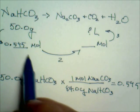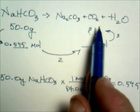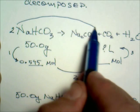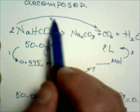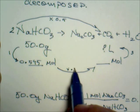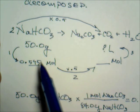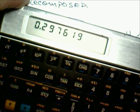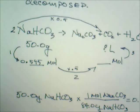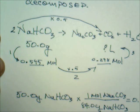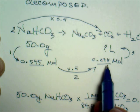Now we go from moles of sodium bicarbonate to moles of carbon dioxide using the mole ratio. The balanced equation gives a 2-to-1 ratio, so we multiply by one-half. Taking 0.595 and dividing by 2 gives us 0.298 moles of carbon dioxide.